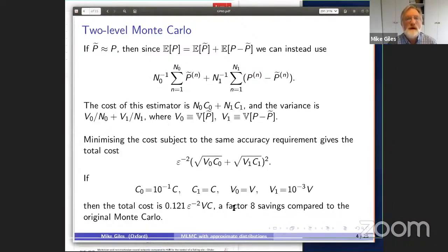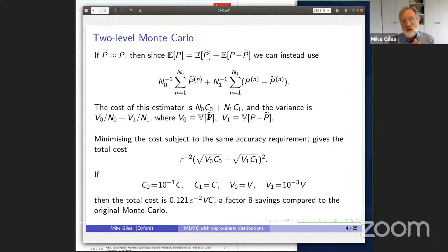In two-level Monte Carlo, if we have a quantity P tilde approximately equal to P, we can use this simple expression for the expected value using two levels. We have n0 samples for the approximate quantity P tilde, and n1 samples for the difference between the true P and the approximate P. If the cost of P tilde is C0, and C1 is the cost of the difference, then we have this expression for the cost of the estimator.